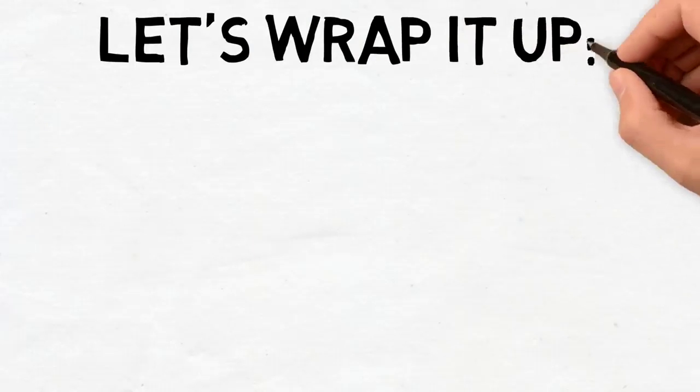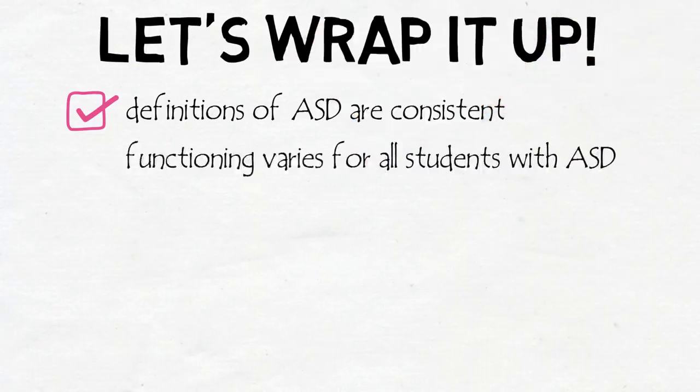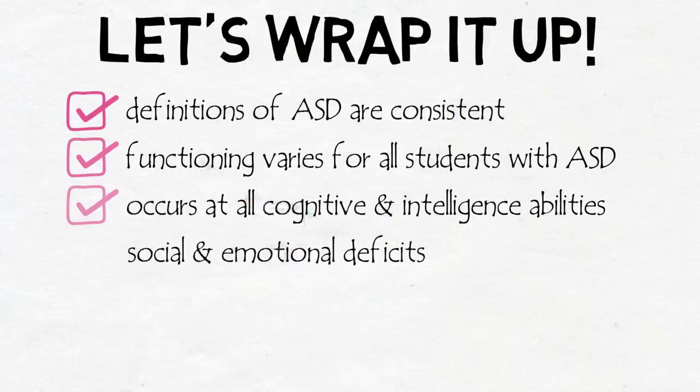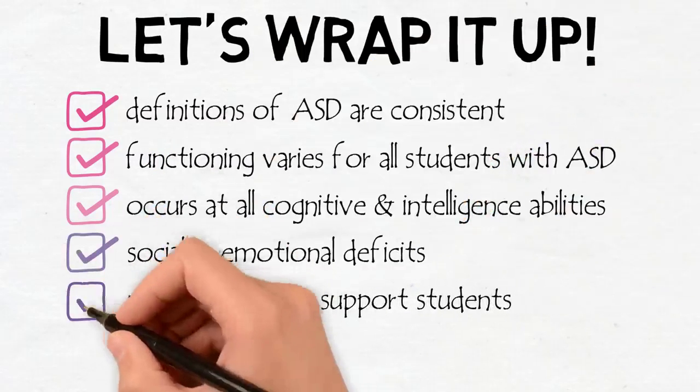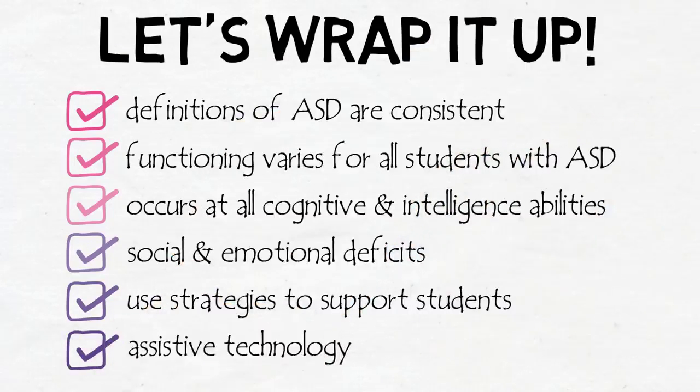Okay, time for a wrap-up. The definition of ASD is consistent with the government, the state of New Jersey, and the DSM-5, where its specifics are laid out. ASD is a spectrum disorder, which means emotional, social, and cognitive functioning varies depending on where the child is placed on the spectrum. ASD occurs at all cognitive and intelligence abilities. Social and emotional deficits are common across the entire spectrum. Teachers should use academic, behavioral, and social supports and strategies that will help the student function within the class. Assistive technologies can bridge the gap and keep students with ASD at ease.